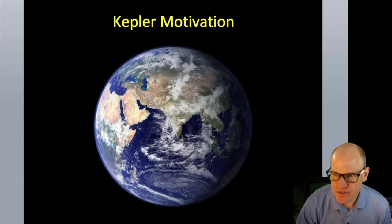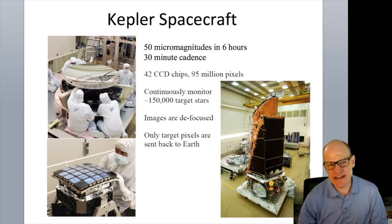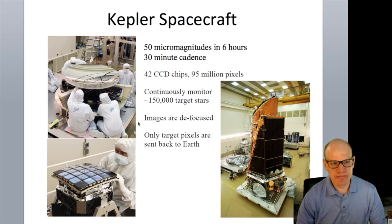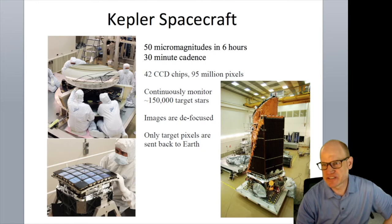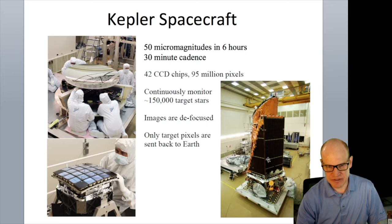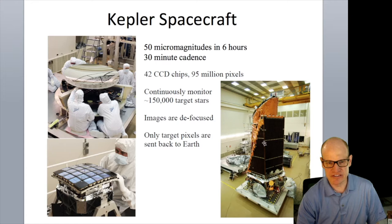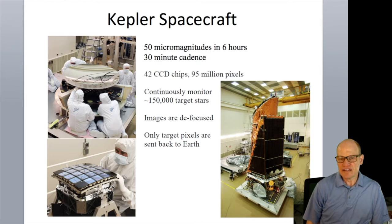The Kepler Space Telescope had a one-and-a-half meter mirror, with an aperture of about 95 centimeters at the top. Light came in, bounced off the mirror, and then hit the photometer — which was inverted and suspended in the center of the spacecraft, pointing down at the mirror.